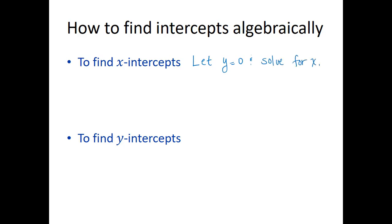Our answers for the x-intercepts are going to be of the form (some number, 0). The y-intercepts are points where the graph crosses the y-axis, so to solve for these algebraically, we will let x equal zero and solve for y. Points will be of the form (0, some number).